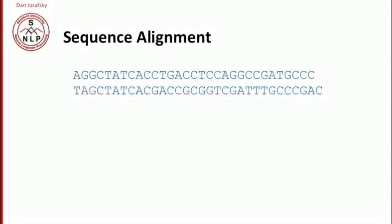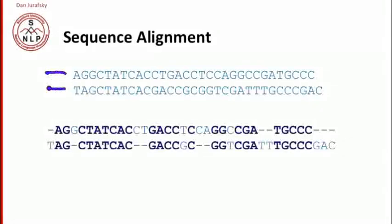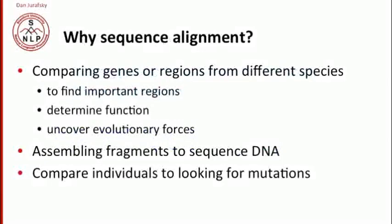Our job is to take two strings like this and produce an alignment like this. In biology, this is important for a number of reasons. We can be finding regions in the genome, discovering functions of genes, or looking for evolutionary things by comparing different species.